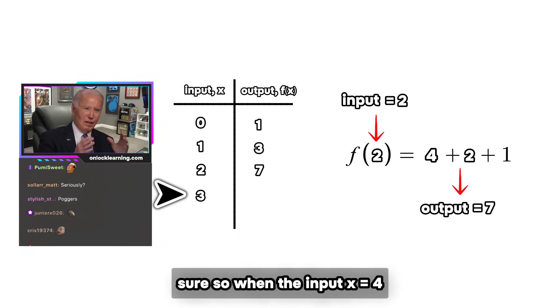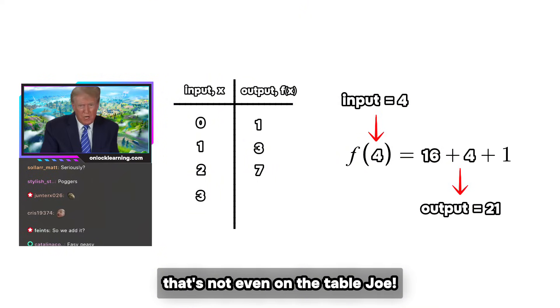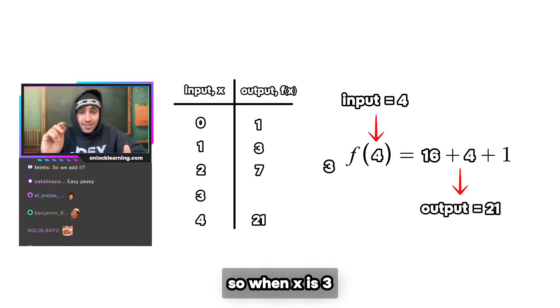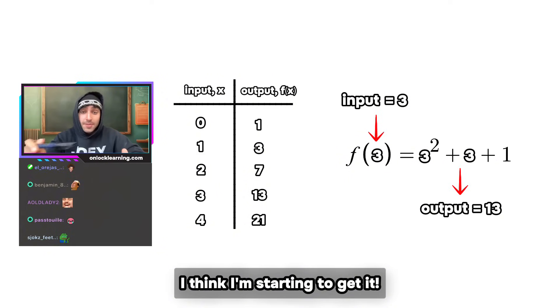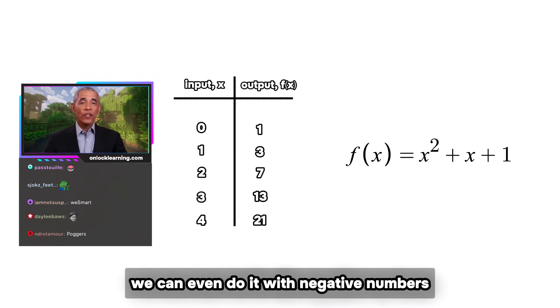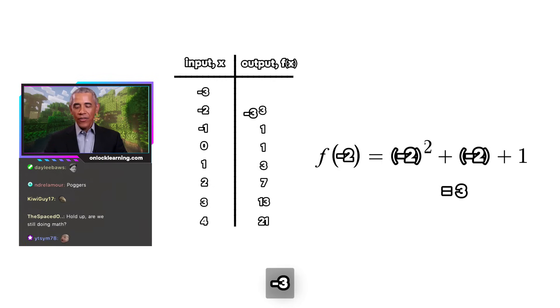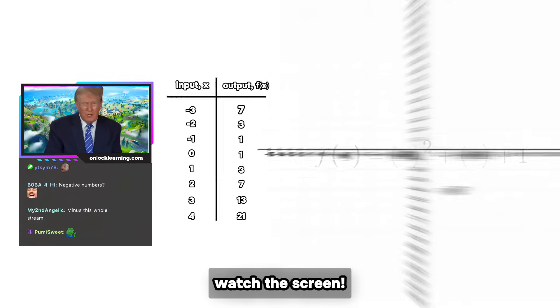Broseph, please could you do the next one? Sure, so when the input x is four, the output f(x) equals 21. That's not even on the table Joe. We'll add it guys. Wait, so when x is three, is f(x) 13? You betcha. I think I'm starting to get it. Hold up, we can even do it with negative numbers: minus one, minus two, minus three. I get it, I get it. Can we get to the differentiation now? Patience.